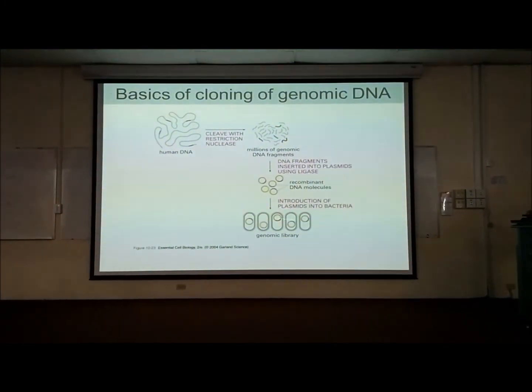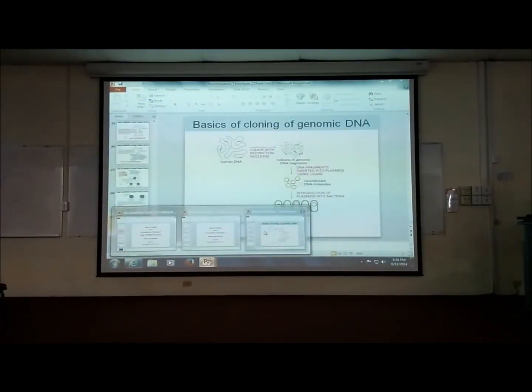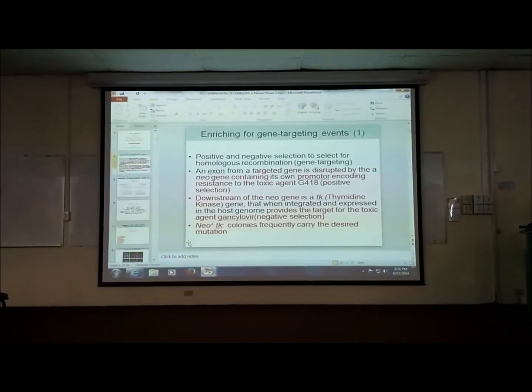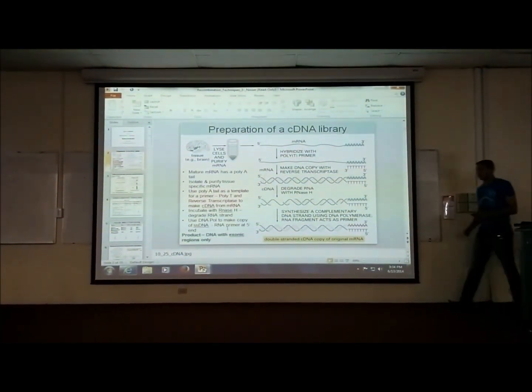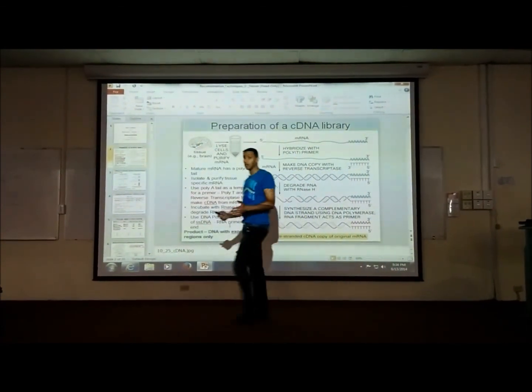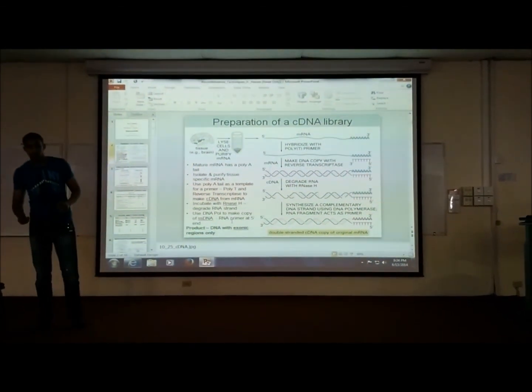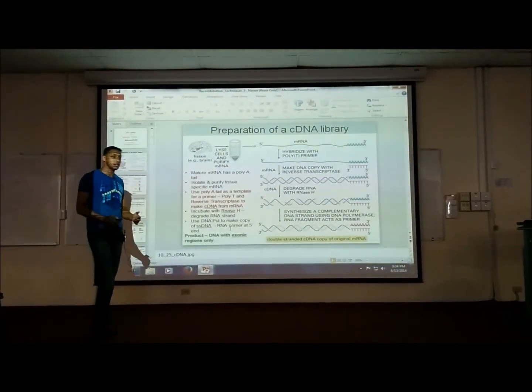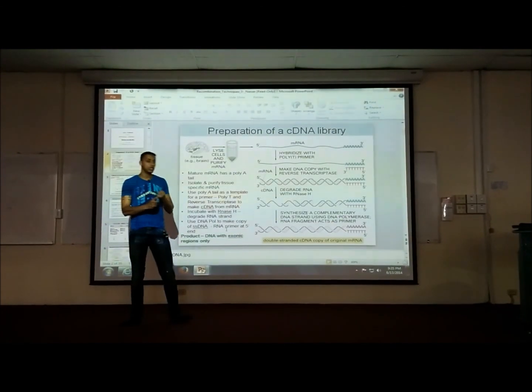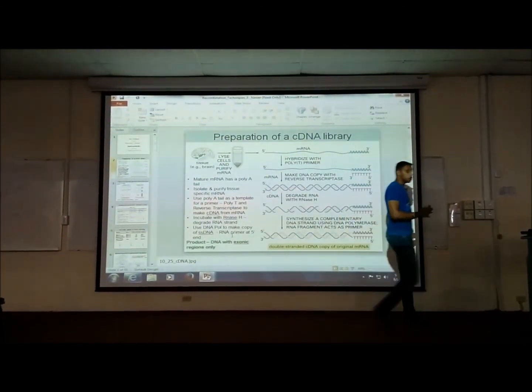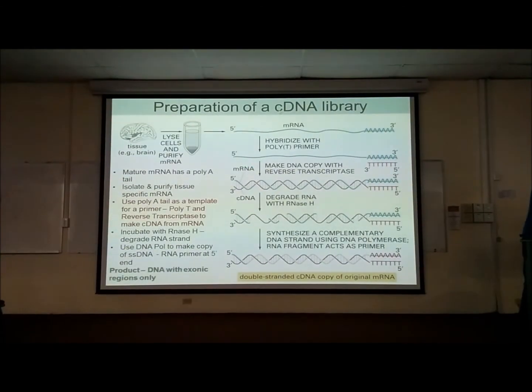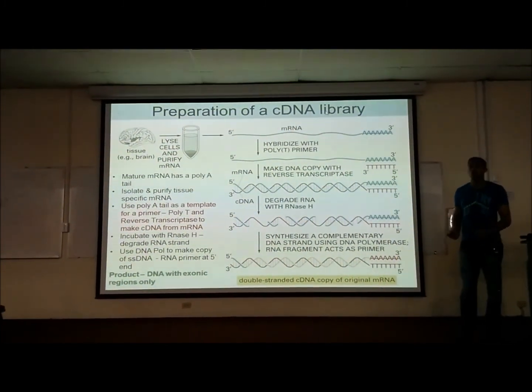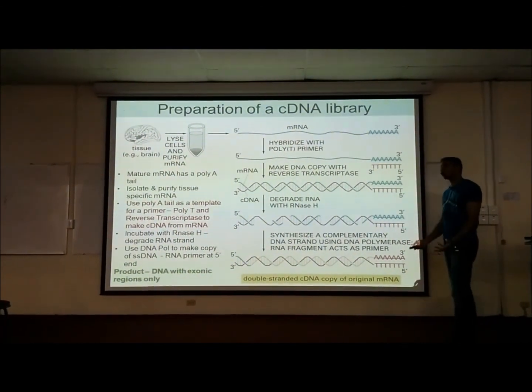So, this is how you make our genomic library. Now, how do we make a cDNA library? What's the difference between a genomic library and a cDNA library? So, our genomic library has regulatory sequences. It has exons and introns. We can't control what gets put it into the plasmid as much. But, our cDNA library, it's called cDNA because it's complementary DNA. It only consists of exons and exons only. How do we make this?